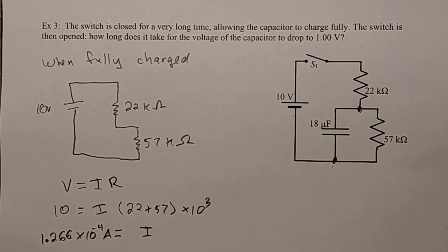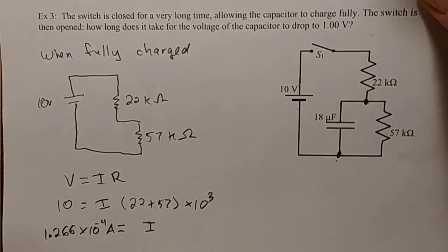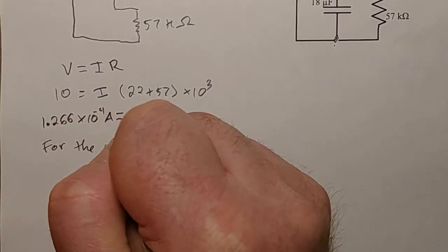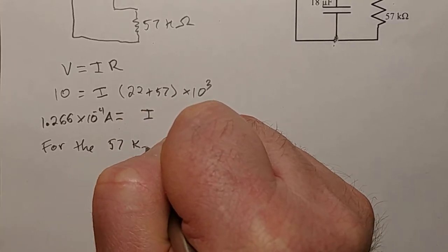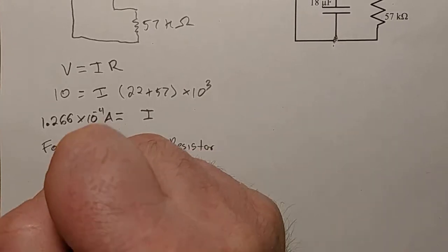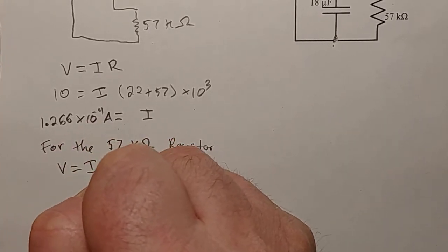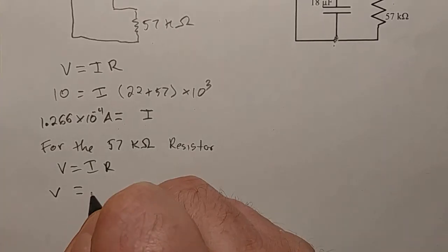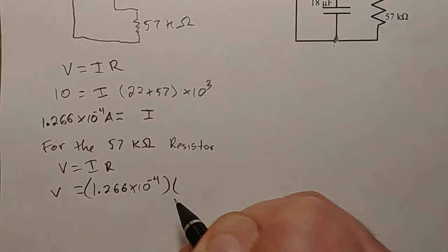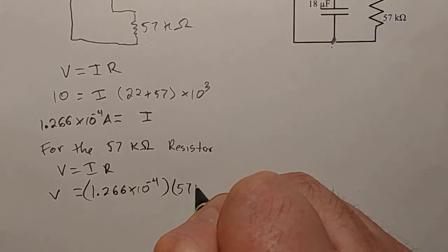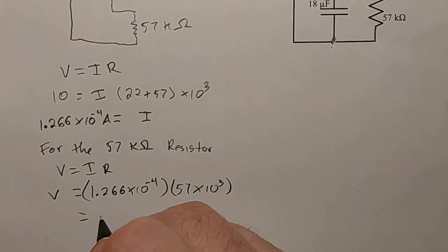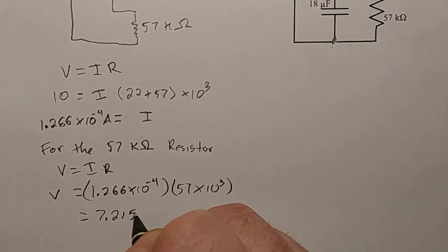That's how much current is flowing through there. But what I wanted to focus on was the 57 kilo ohm resistor. Once again, we can use V equals IR, and we know that the current going through there is 1.266 times 10 to the negative 4, and we know that its resistance is 57 times 10 to the 3. So from that, we can find out the voltage, which is 7.215 volts.